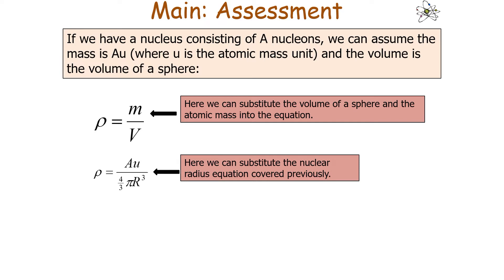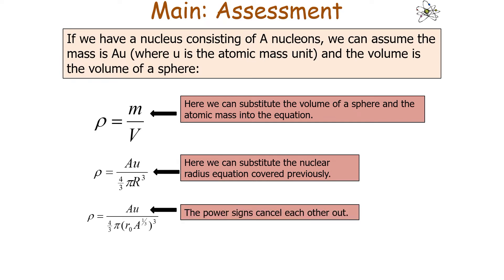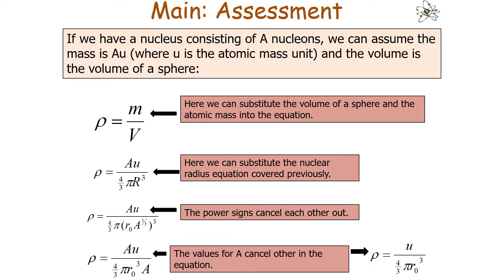We can substitute the nuclear radius equation from previously, so rho equals Au over (4/3)π(R₀A^(1/3))³. The A^(1/3) term and the cubed bracket cancel each other out. So we get rho equals Au over (4/3)πR₀³A. Now you'll notice that on the top and the bottom of this equation there is the term A, the number of nucleons, so A cancels out, leaving rho equals u over (4/3)πR₀³.